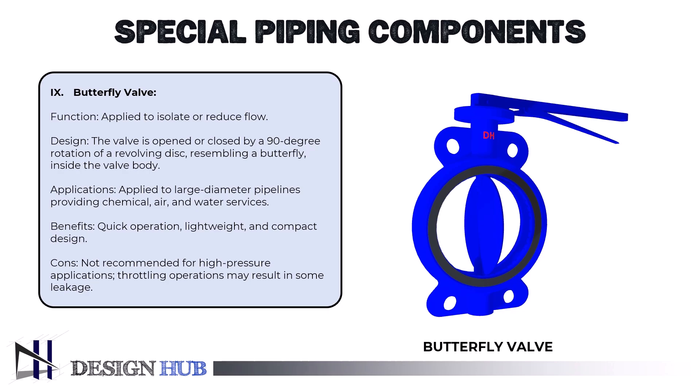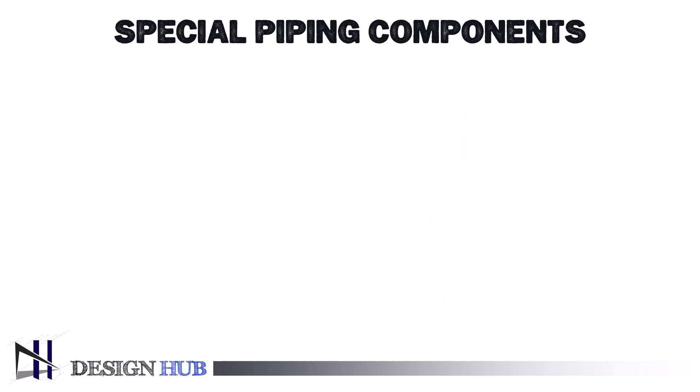A butterfly valve belongs to the quarter turn valve family. When the disc rotates a quarter turn, the valve is fully open or closed. On a rod, a metal disc is positioned as the butterfly. The disc is rotated to fully block the channel when the valve is closed. The disc is turned a quarter turn to permit nearly unfettered fluid circulation when the valve is fully open. The valve can also be opened gradually to reduce flow.